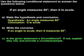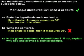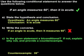Our conditional statement is true. If an angle measures 60 degrees, then it is acute. But the converse is false, because if an angle is acute, it does not necessarily measure 60 degrees. It could have any measure between 0 and 90 degrees. So a counterexample would be a 35 degree angle.